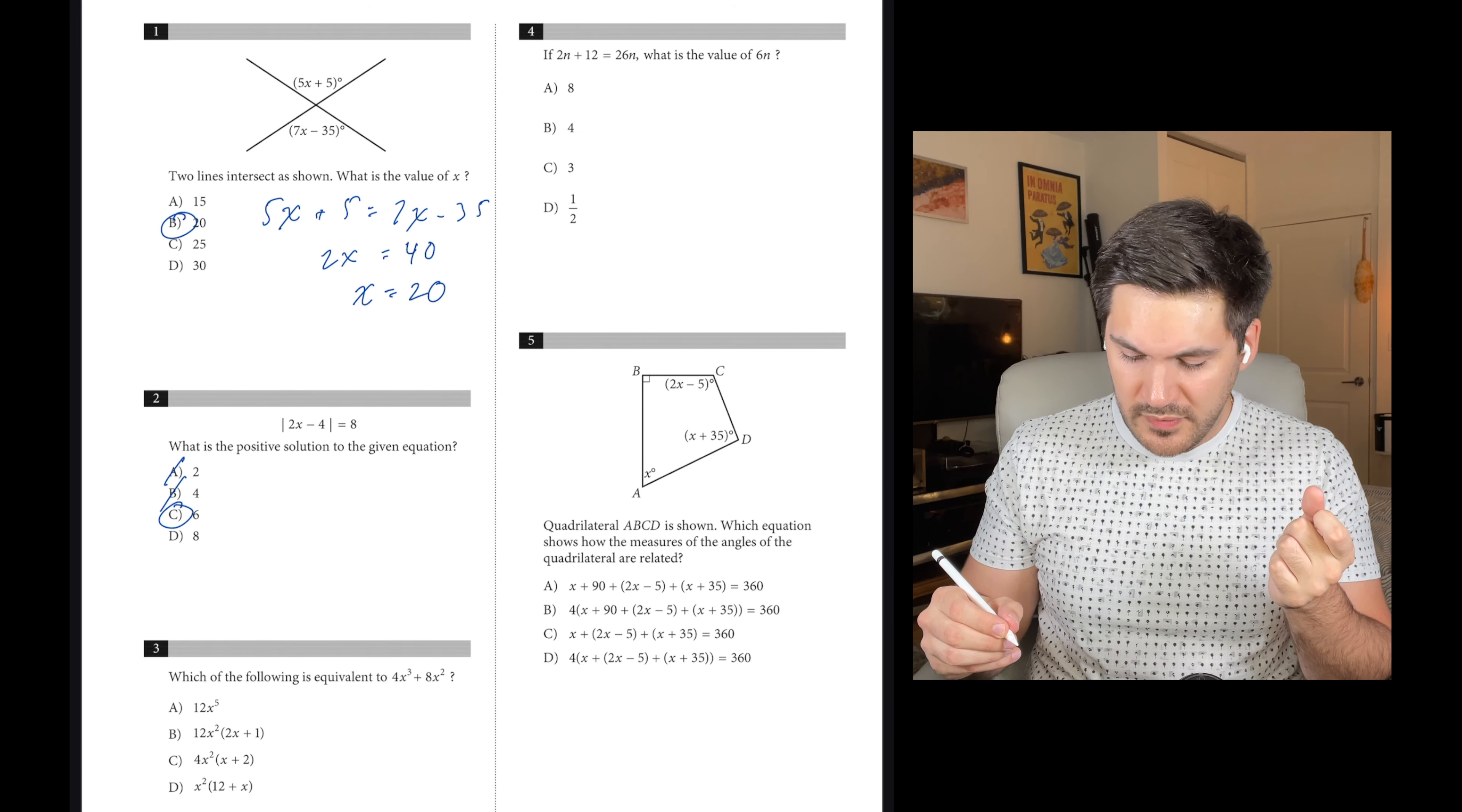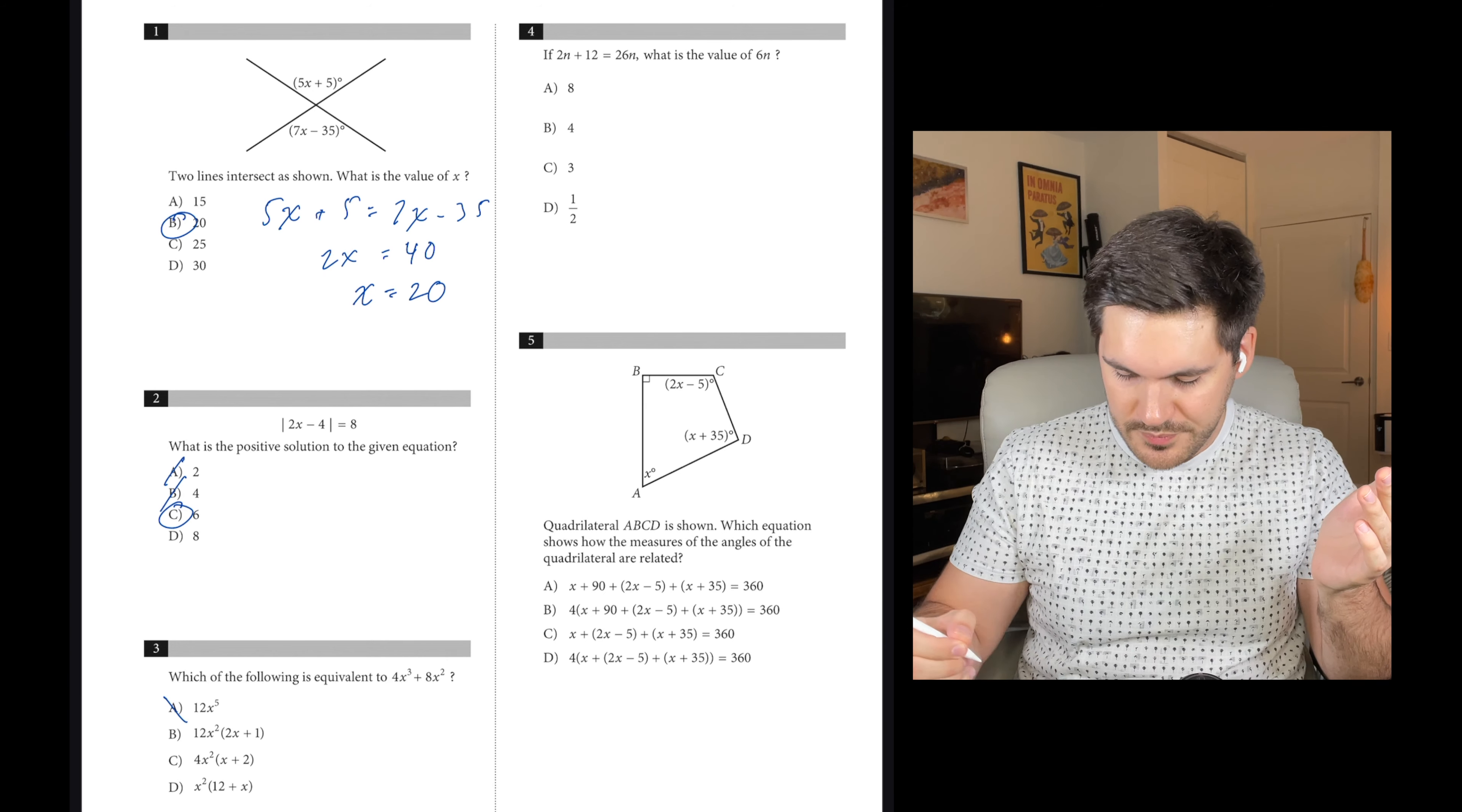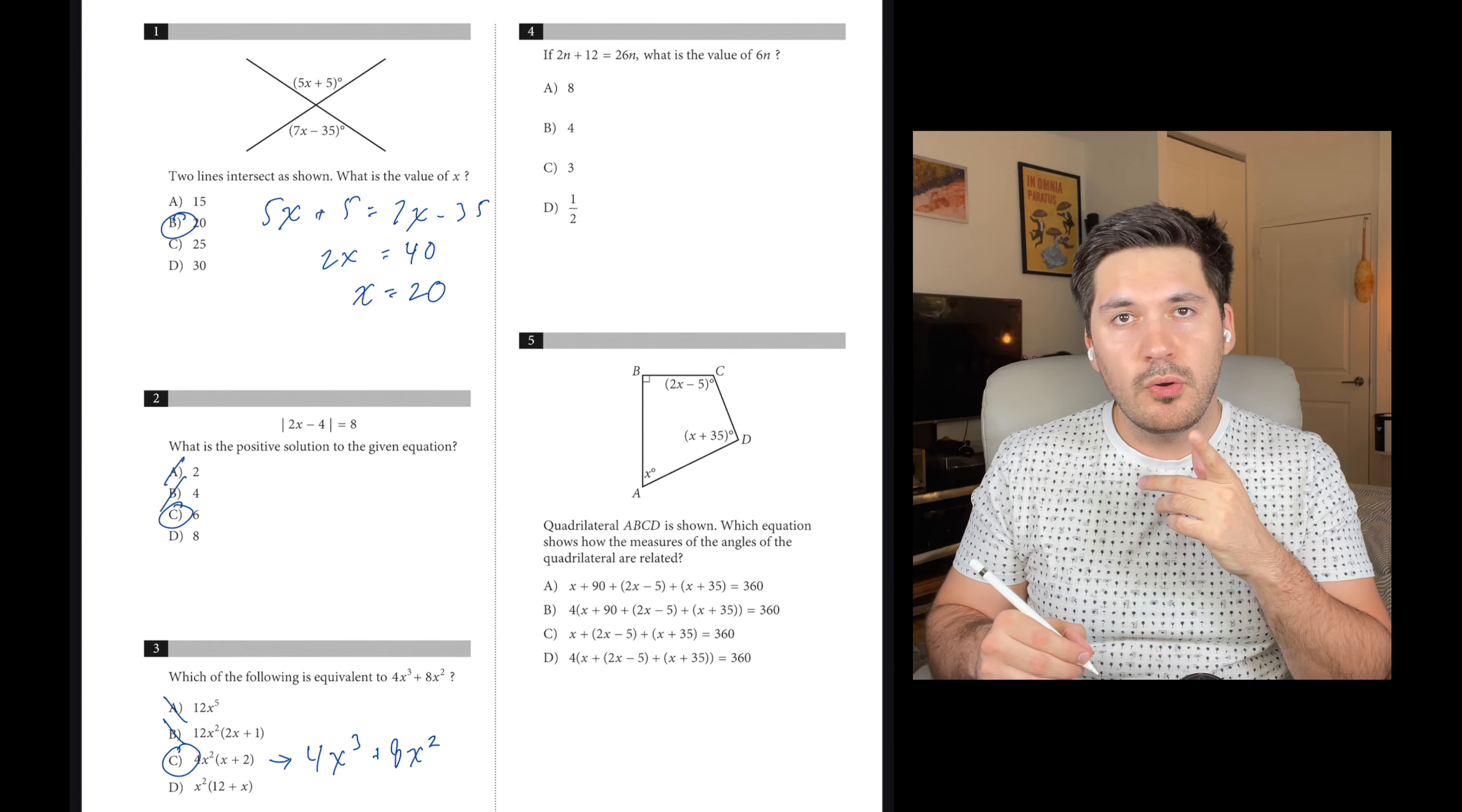Number three, which of the following is equivalent to 4x cubed plus 8x squared? We'll go through the answer choices. A is incorrect because they added 4 and 8, but you can't add them because one's an x cubed and one's an x squared. B is incorrect for basically the same reason. We can test C by distributing it out. This gets us 4x to the third plus 8x squared, so C works.